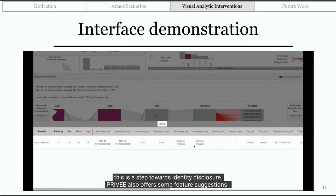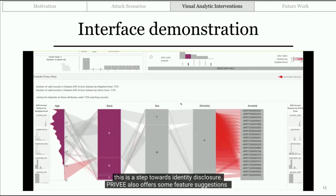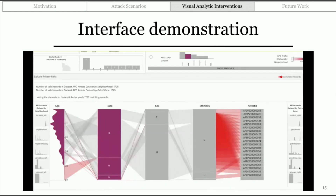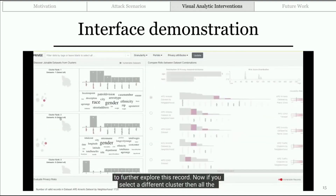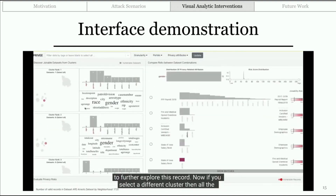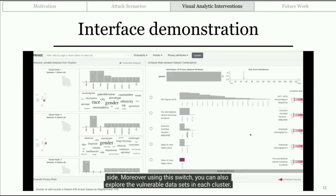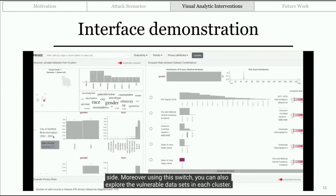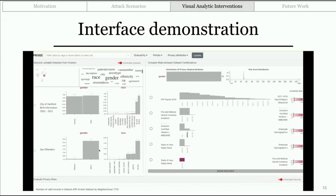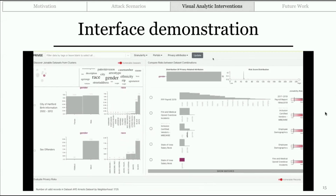We can argue that this is a step towards identity disclosure. PV also offers some feature suggestions to further explore this record. If we select a different cluster, all possible pairwise combinations of datasets in that cluster are loaded on the right-hand side. Using a switch, you can also explore the vulnerable datasets in each cluster. This concludes the short demonstration of the PV interface.